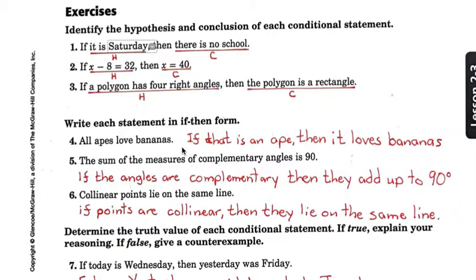Write each statement in if-then form. These are kind of hard. Some of these are weird. Like number four here, all apes love bananas. Well, you have to come up with something that kind of explains what you're talking about here. So I wrote, if that is an ape, then it loves bananas.